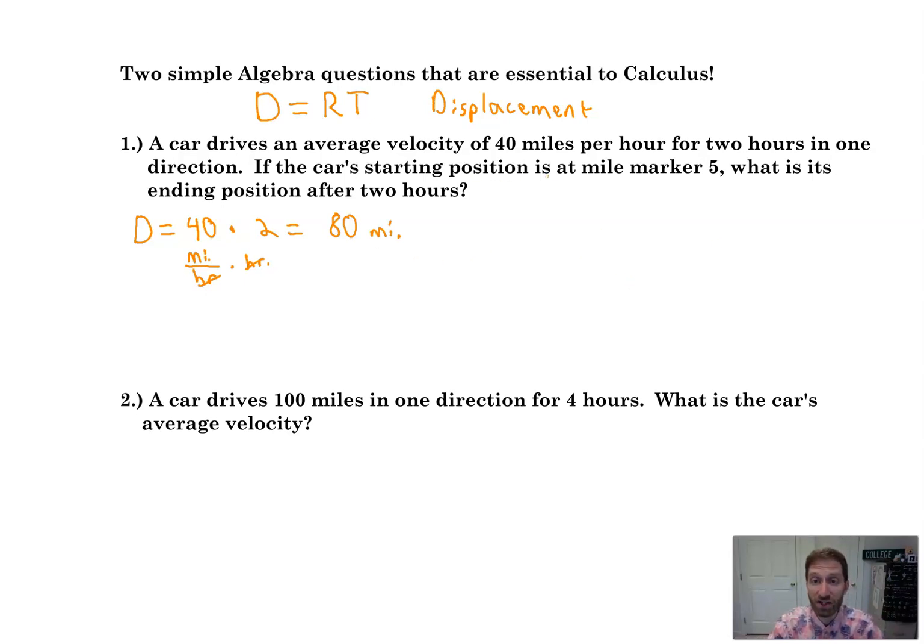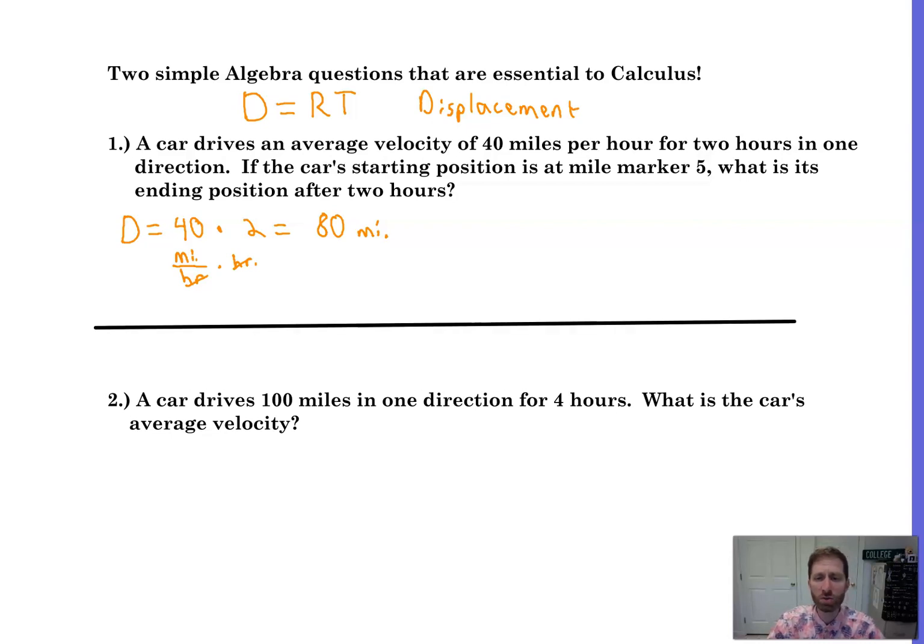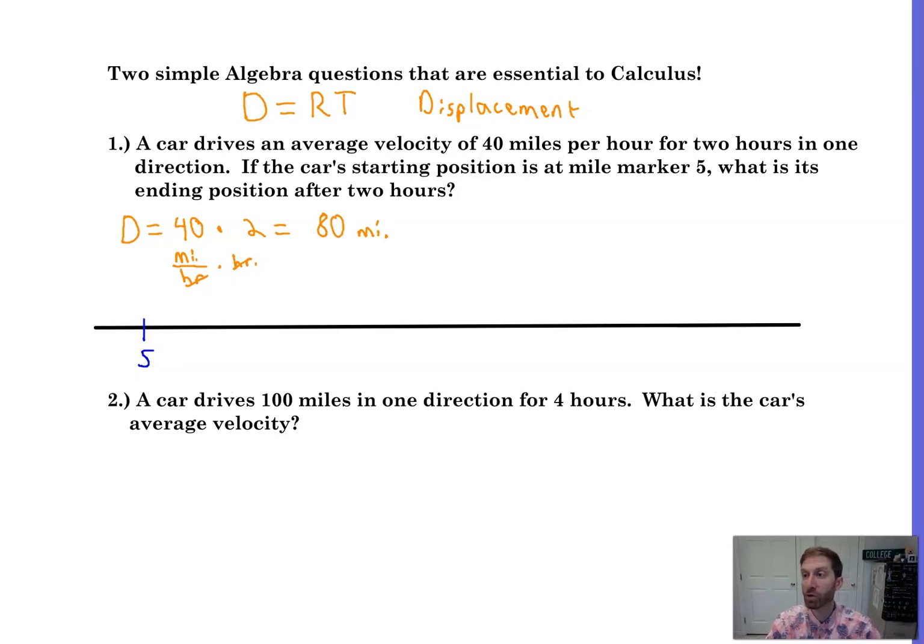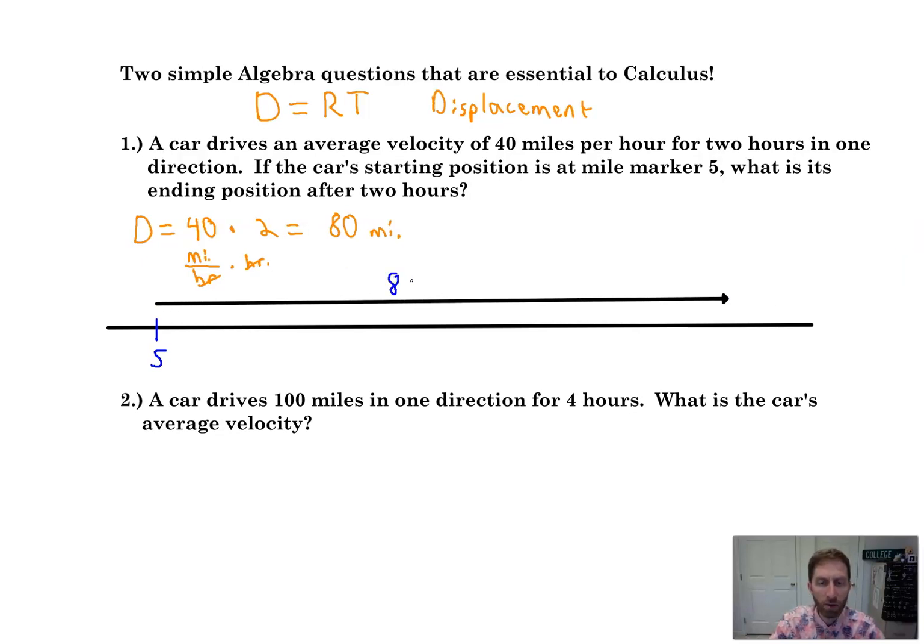If the car's starting position is at mile marker five, what is its ending position after two hours? Okay, let's get a picture of what's going on here, shall we? So basically, you're traveling on a road. Let's assume just for simplicity that we're traveling in one direction. So we start out at mile marker five. There's a mile marker on the side of the road and we travel for 80 miles. If we're traveling for 80 miles, let's have a little arrow showing us going in one direction like that. And I'm going to put a little 80 on top of here to represent that we've gone 80 miles.